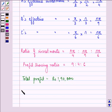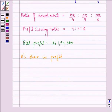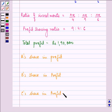So, A's share in profit as well as B's share in profit and C's share in profit. The total profit will be 9, 4, 6 respectively divided by the sum that is 19 multiplied by the total profit.